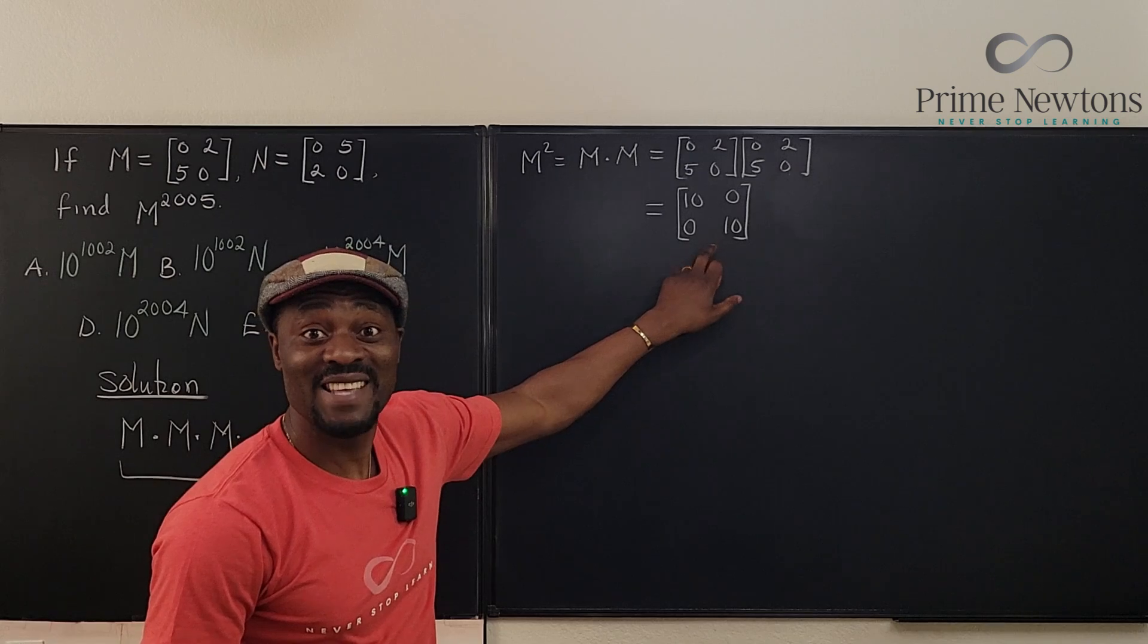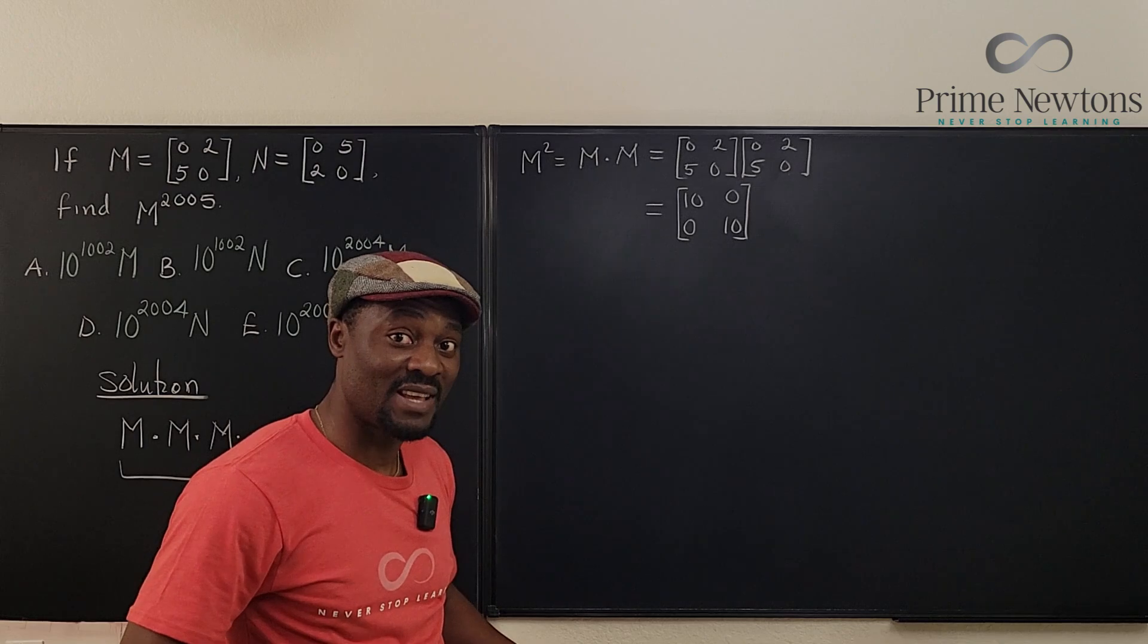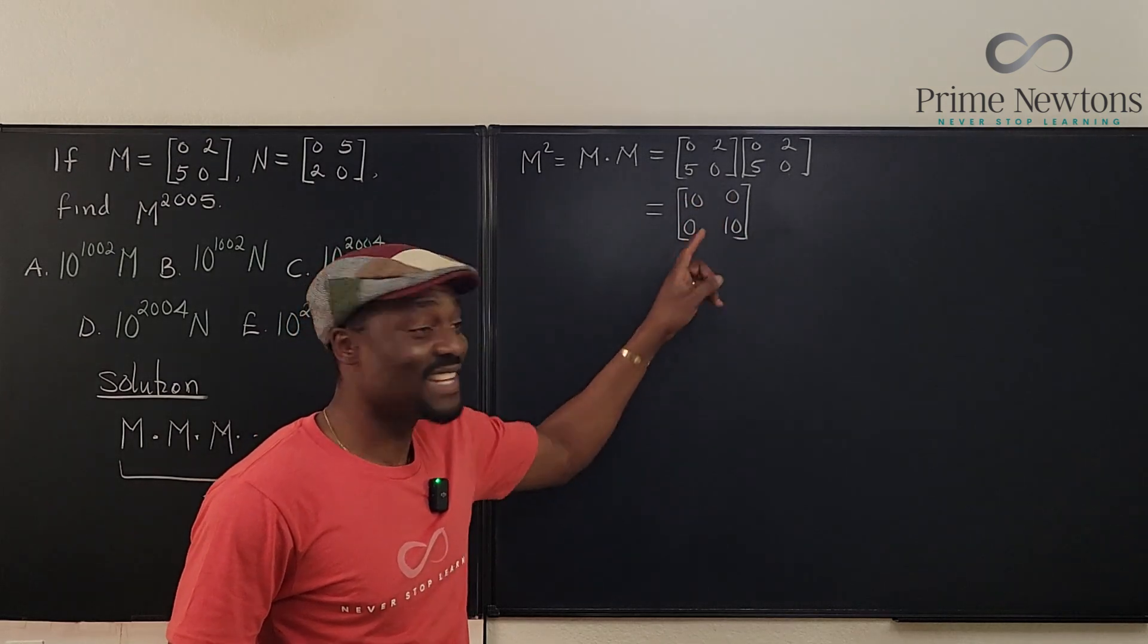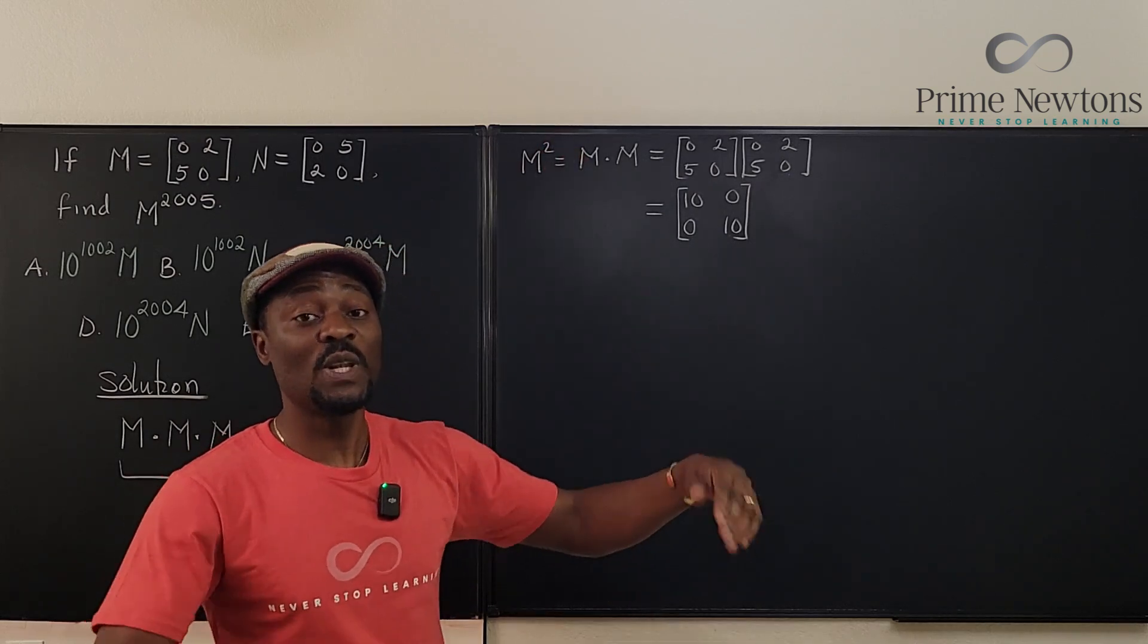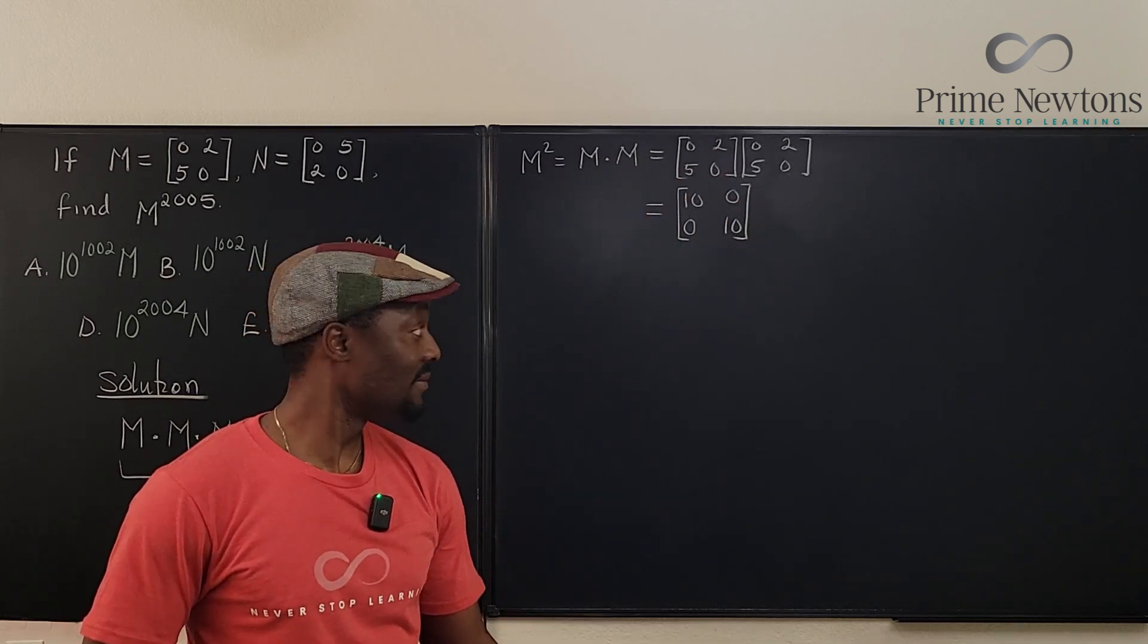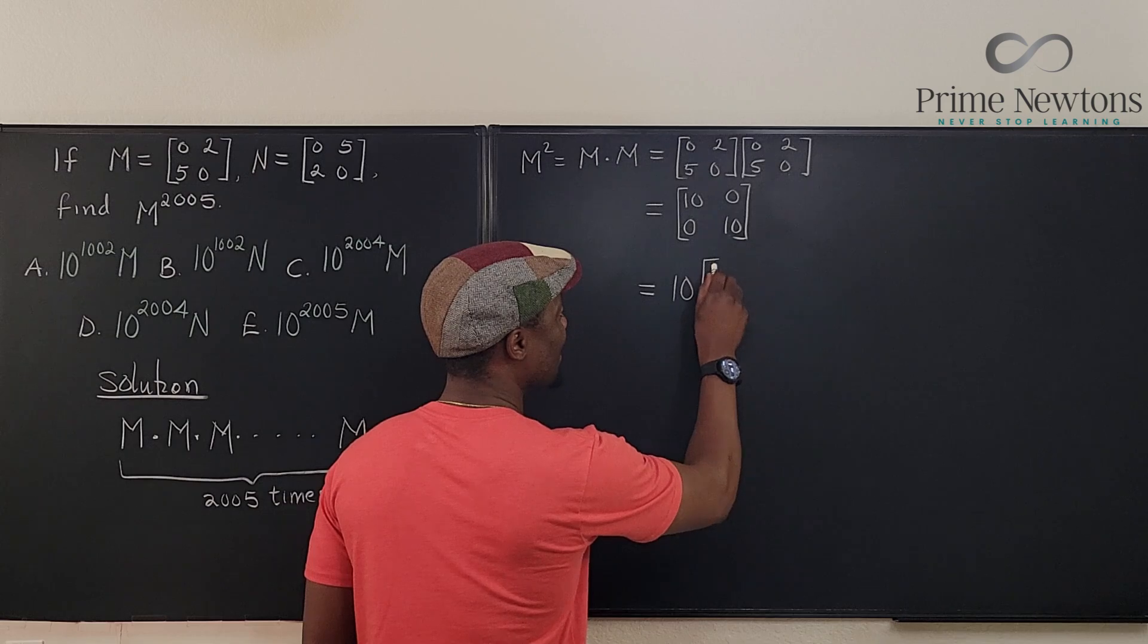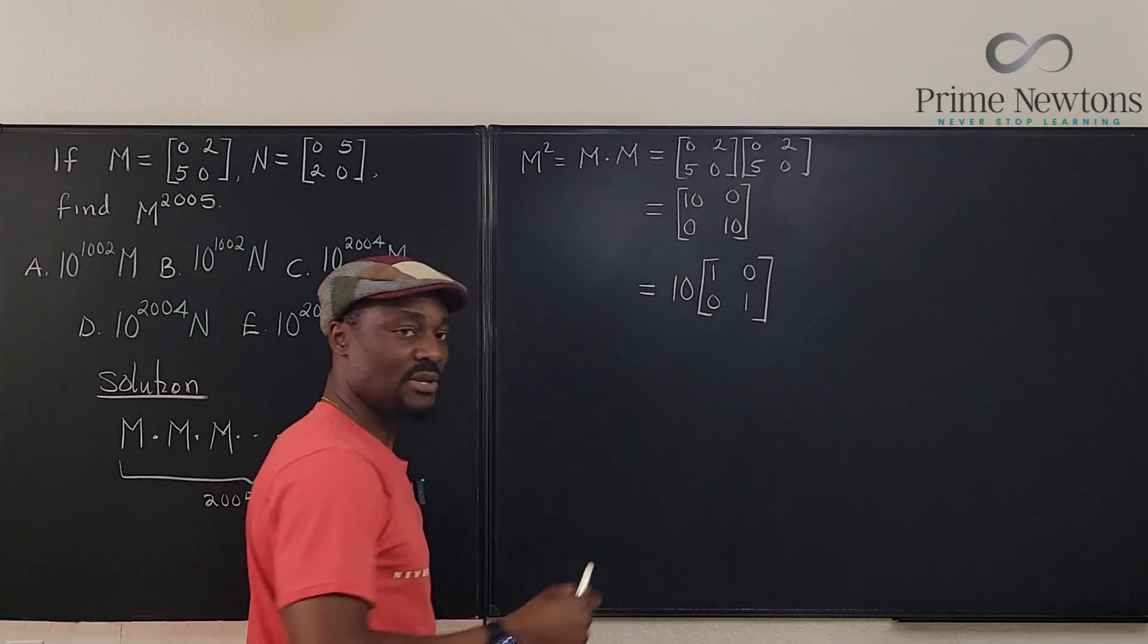Amazingly, this is the best thing that can happen in a matrix. Having only your main diagonal having entries, and the entries are even the same. This is 10, this is 10. Everything else in your matrix is 0. This is a diagonal matrix, because all the non-zero entries only appear in the diagonal. And this actually can be rewritten as 10 times a matrix that looks like [1 0; 0 1].